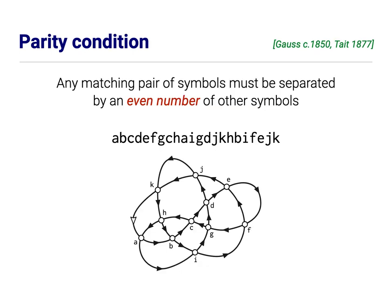So Gauss quickly realized that one condition that Gauss codes of real curves have to satisfy is a parity condition. Any matching pair of symbols in the Gauss code must have an even number of other symbols in between them. So, for example, between the two A's in this particular Gauss code, there are eight other symbols. Between the two B's, there are 12 other symbols. Between the two C's, there are four. And this is relatively easy to prove using a winding number argument.